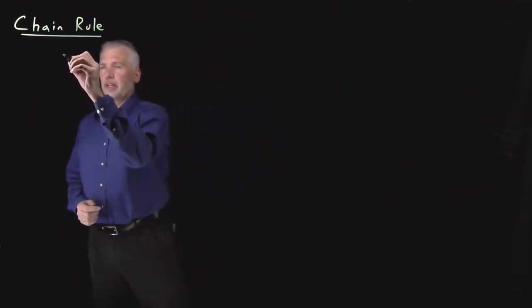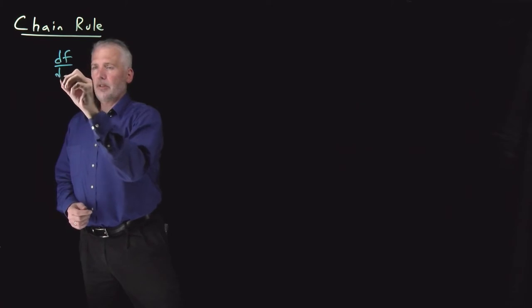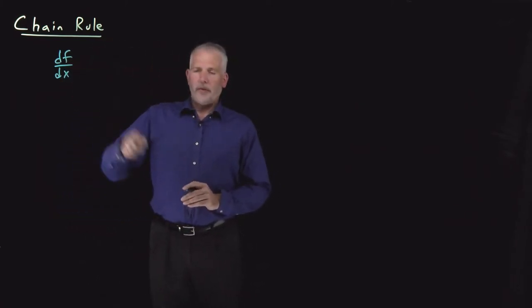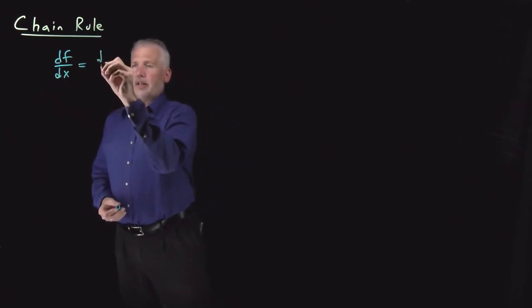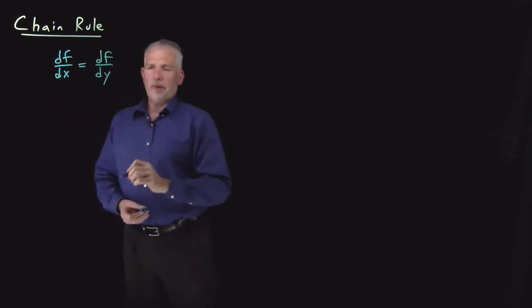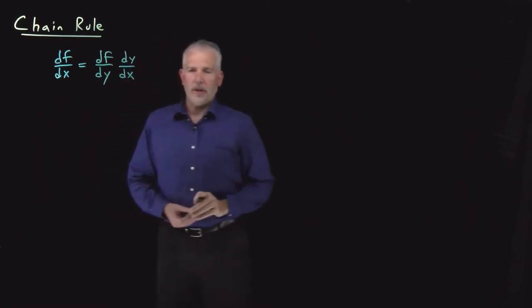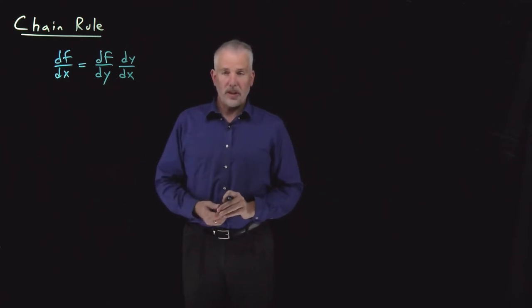The first identity is one you've heard of before: the chain rule. You likely know what that is for ordinary derivatives. If I have a function, the derivative df/dx can be written as the derivative of the function with respect to a different variable, multiplied by the derivative of that other variable with respect to the one I was originally interested in. That's the chain rule for ordinary derivatives.